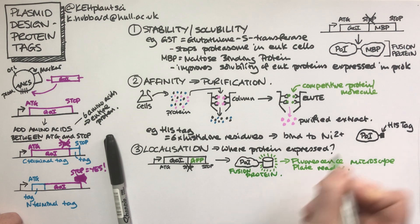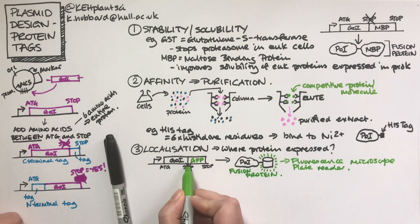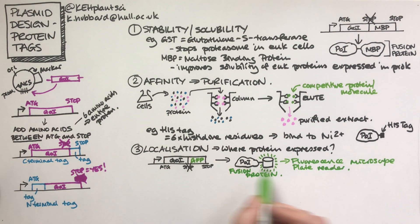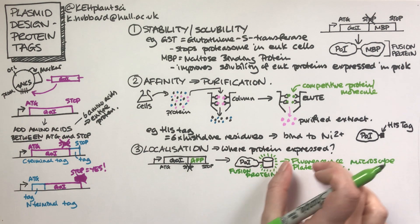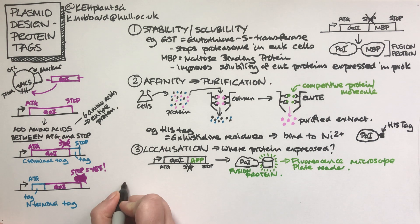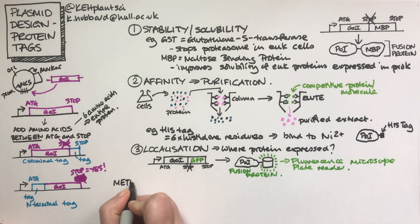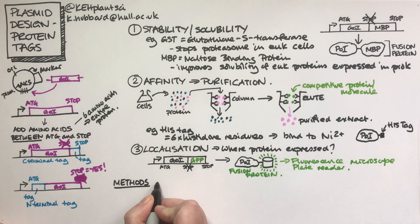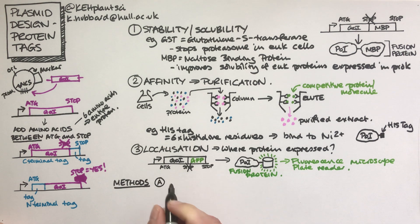Because GFP is a fluorescent protein, if you take that to a fluorescence microscope or quantify it on a plate reader with fluorescence capabilities, you can tell something about where that protein is. Again, notice that this is another fusion protein — gene of interest, remove the stop codon, immediately put your tag on, in this case GFP, to make a fusion protein that's all made as one.